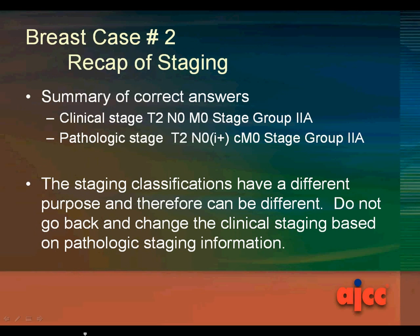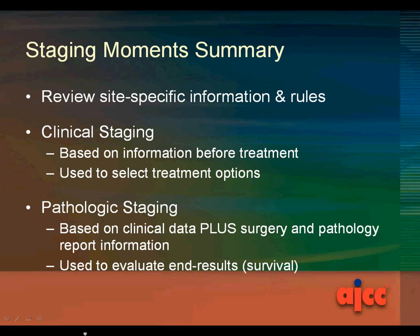The summary of correct answers: clinical stage T2, N0, M0, stage group 2A; pathologic stage pT2, pN0(i+), clinical M0, stage group 2A. The staging classifications have a different purpose and therefore can be different — do not go back and change the clinical staging based on pathologic staging information. Clinical staging is based on information before treatment and is used to select treatment options; pathologic staging is based on clinical data plus surgery and pathology report information and is used to evaluate end results or survival.